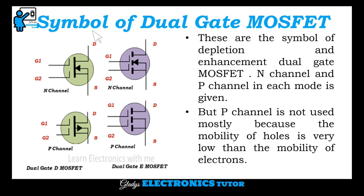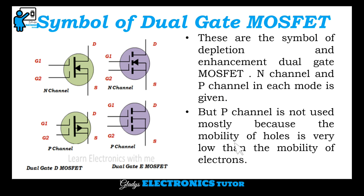This is the symbol of dual gate MOSFET. These are the symbols of dual gate depletion MOSFET — this is N-channel and P-channel. This is the symbol of dual gate enhancement MOSFET — this is for N-channel and this is for P-channel. P-channel is not used mostly because the mobility of holes is very low compared to the mobility of electrons.